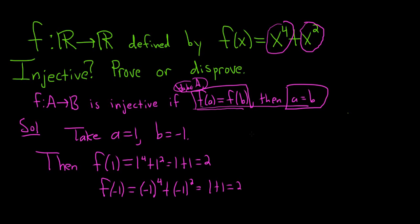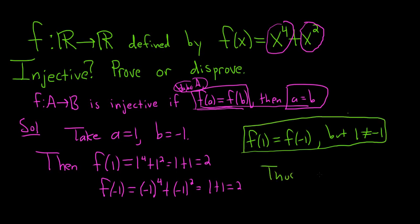So we have the first condition satisfied, we have that f of 1 is equal to f of negative 1. So if this was an injective function, that would imply that a is equal to b. It would imply that 1 is equal to negative 1, but 1 is not equal to negative 1. So this, it fails. So all you have to do is find one example of where it fails. So thus, f is not injective.